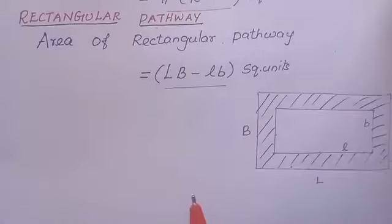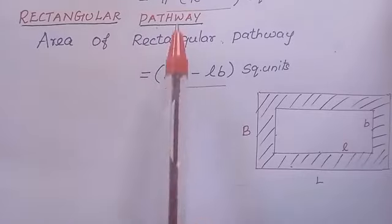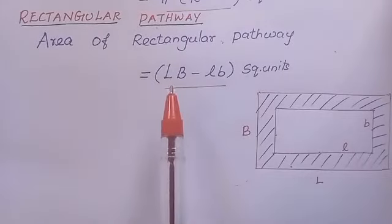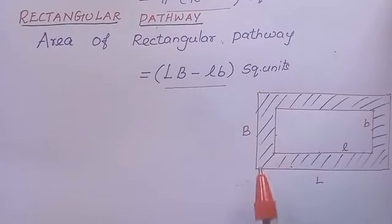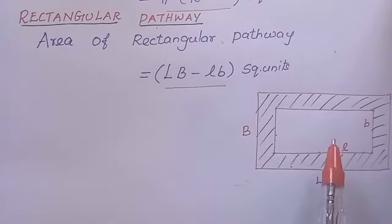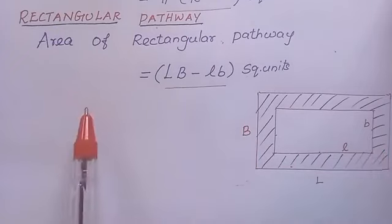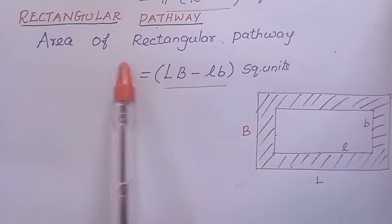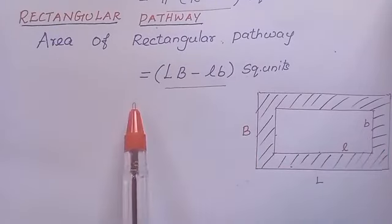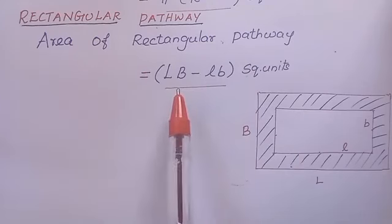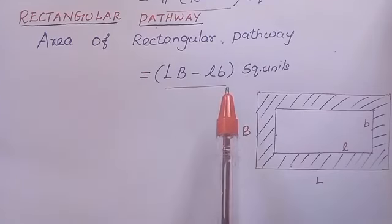Next, rectangular pathway. For that we have to find the difference between the area of the outer rectangle minus the area of the inner rectangle. That is, L into B minus small l into b. So the formula to find out the area of a rectangular pathway equals LB minus lb square units.